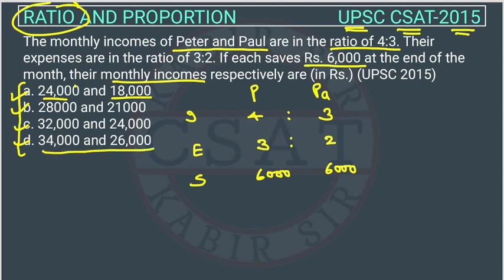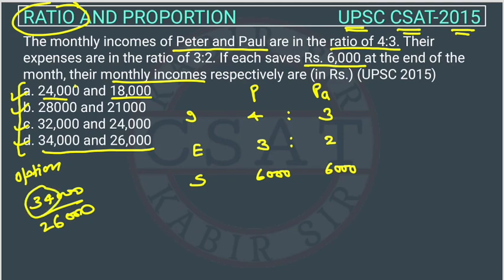Starting from option D: the expenses become 34,000 and 26,000. But 34,000 is not divisible or a multiple of 4, so since the income ratio requires a factor of 4, we can directly eliminate these options. We can solve through options, but let me first explain the concept.